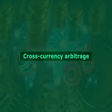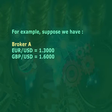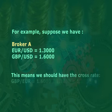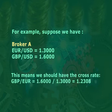Trading textbooks always talk about cross currency arbitrage, also called triangular arbitrage. The chances of this type of opportunity coming up, much less being able to profit from it, are remote. With triangular arbitrage, the aim is to exploit discrepancies in the cross rates of different currency pairs. For example, suppose we have broker A, where EUR/USD is quoted as 1.30000 and GBP/USD is quoted as 1.60000. This means we should have the cross rate of GBP/EUR equal to 1.60000 divided by 1.30000, which gives 1.2308.